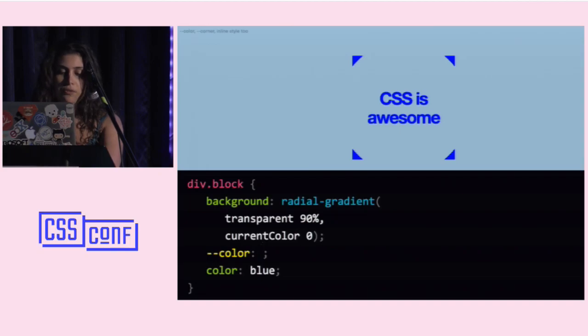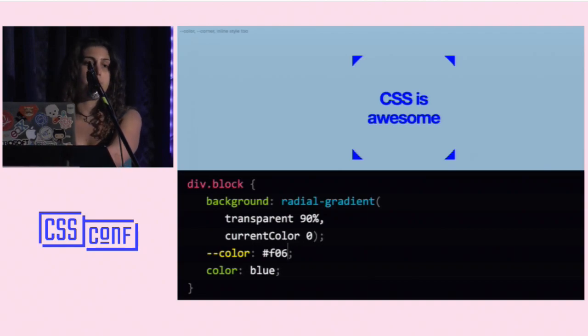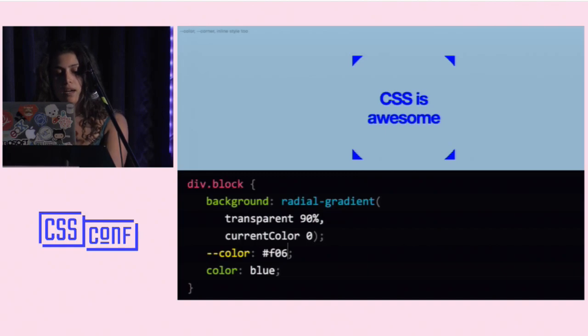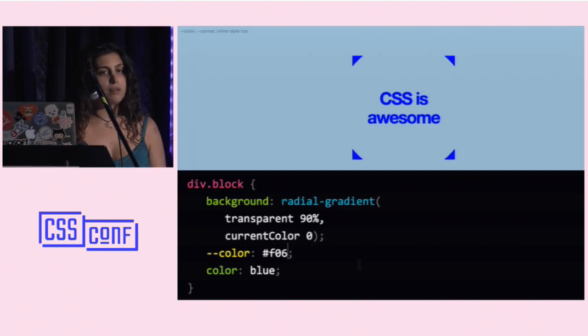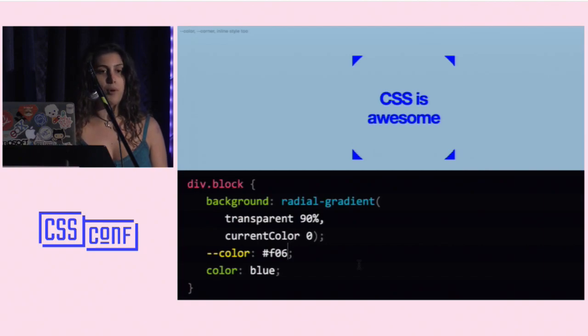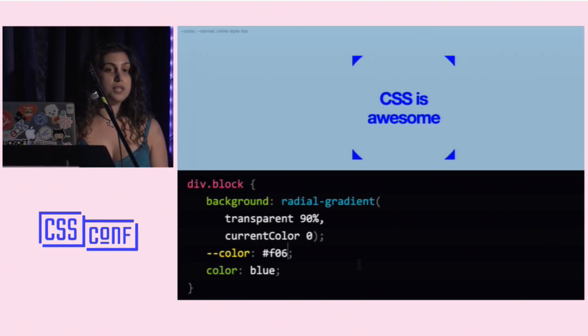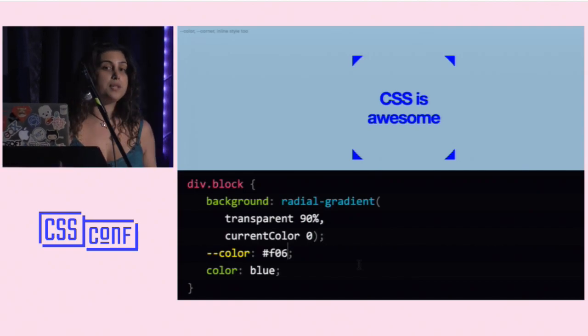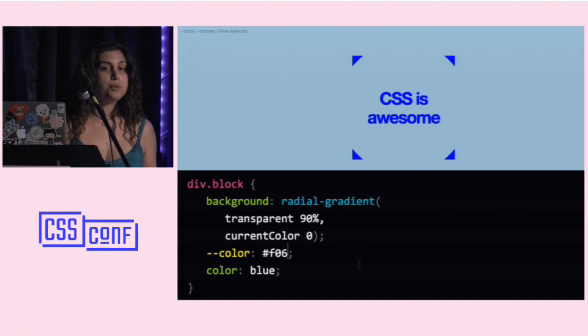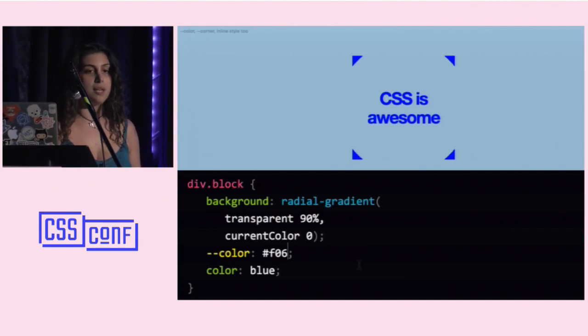CSS variables are kind of like CurrentColor on steroids — they allow us to extend this concept to pretty much anything we want. CSS variables are declared with this weird dash-dash syntax; they're essentially custom properties that work exactly the same way as any other CSS property. The reason we didn't use a dollar sign is that we want people to be able to use both Sass variables and CSS variables, because they do different things and accomplish different goals.